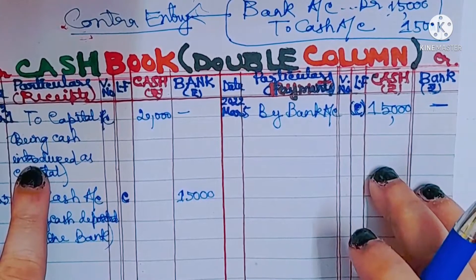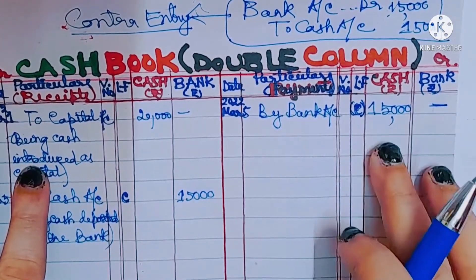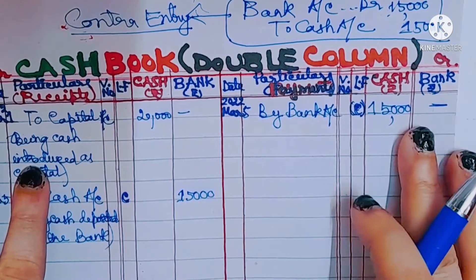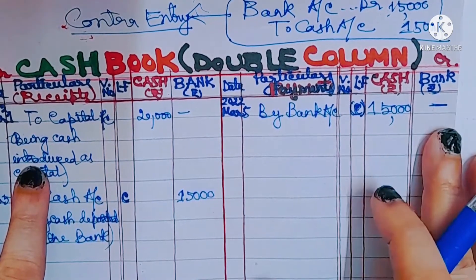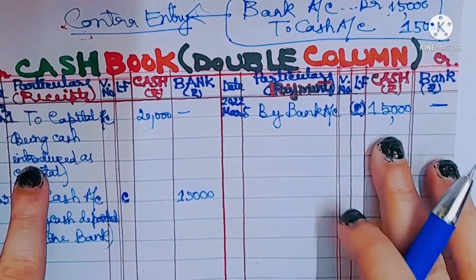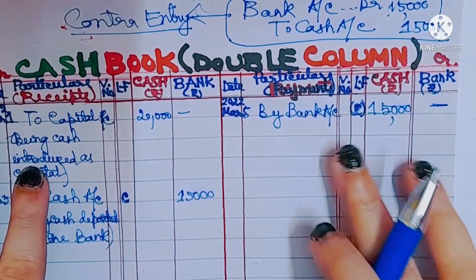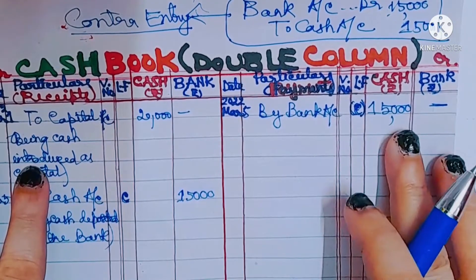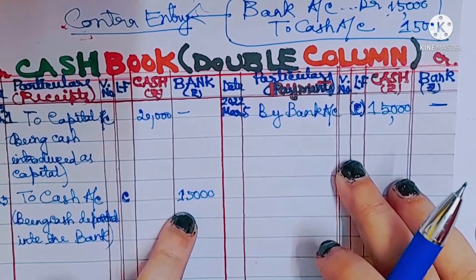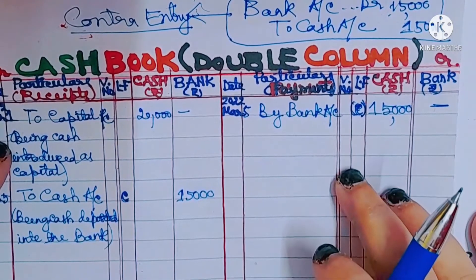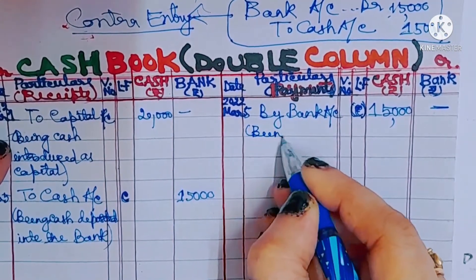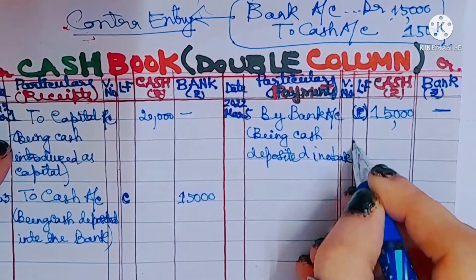There is a logic behind this: cash column represents cash account, which is a real account. According to real account, what goes out is credited. When cash is deposited into the bank, cash goes out from the business. So cash account will be credited — 15,000. Cash balance gets reduced and bank balance gets increased. That is why bank is debited and cash is credited. The narration: being cash deposited into bank.